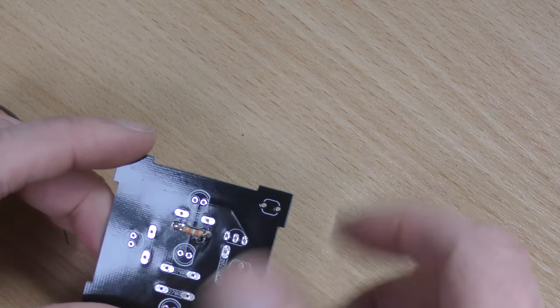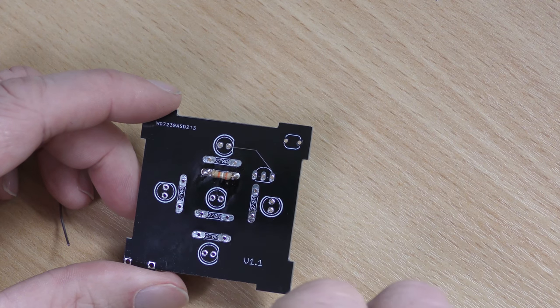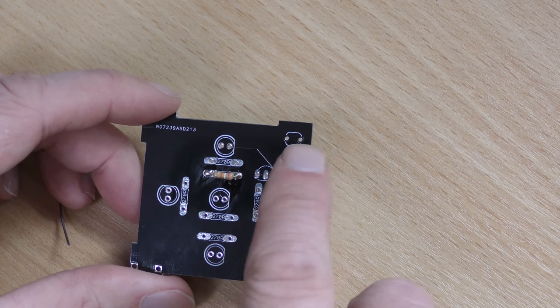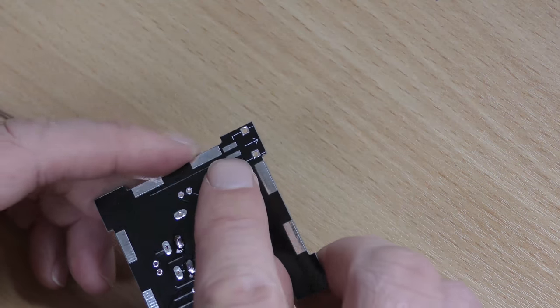And then you go on to populate the rest of the resistors, then the LEDs, and then the transistor. We'll come back to the video when it's time for the LDR and the USB connector.